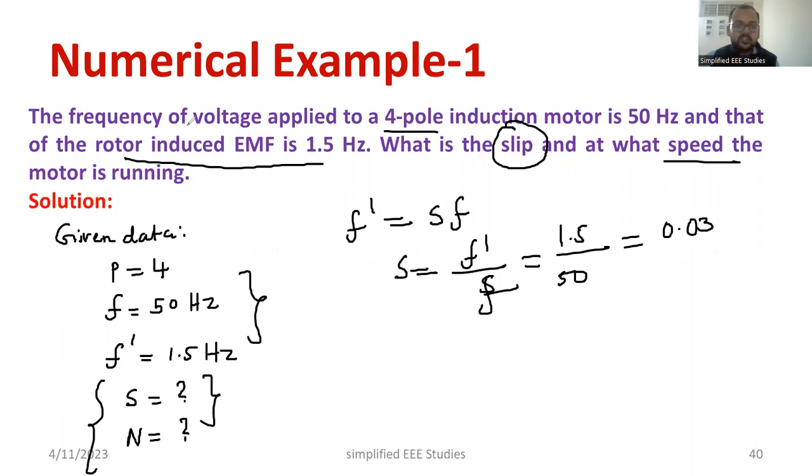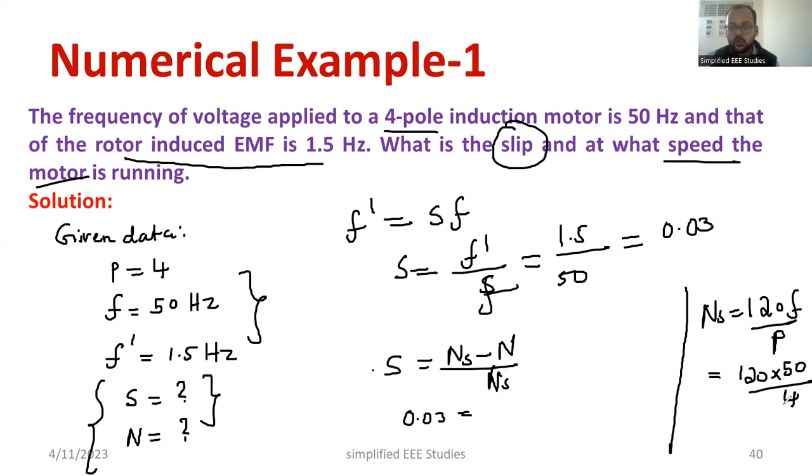Next my intention is to calculate the speed of motor, that means actual speed. You know the relationship between the slip, synchronous speed and actual speed. The slip is nothing but Ns minus N divided by Ns. So from this you can substitute the value of slip. Slip is 0.03. What is Ns? How to calculate Ns? Ns is nothing but 120 F by P. This formula you must remember. 120 into 50 divided by 4. That means 1500 RPM. So instead of Ns, I can substitute 1500 RPM. It is a synchronous speed.